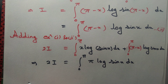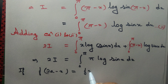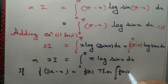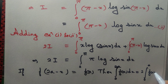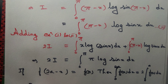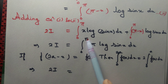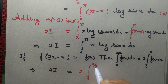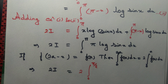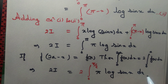But we know that if f(2a - x) = f(x), then the integral from 0 to 2a of f(x)dx equals 2 times the integral from 0 to a of f(x)dx. Let us apply this formula. So 2I equals the integral from 0 to 2a, that is 2 times π/2, which equals 2 times the integral from 0 to π/2, taking a = π/2. This equals 2 times the integral from 0 to π/2 of π·log(sin x)dx.